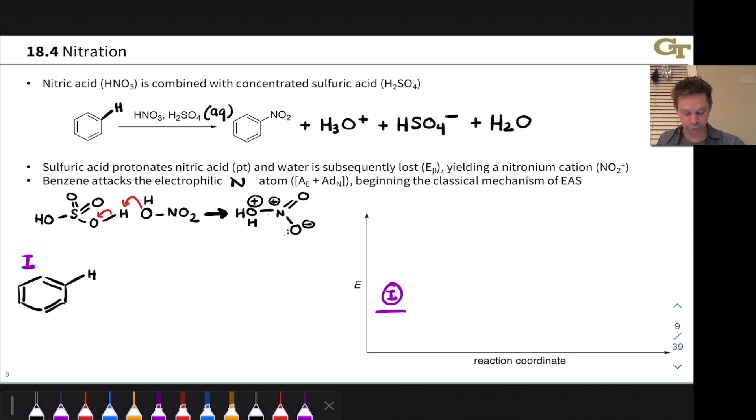That's a horribly unstable species, but it can immediately fall apart through a beta elimination step, through beta elimination type electron flow like this, to lose a molecule of water and produce a cation NO2+. And this NO2+ species is the active electrophile in nitration reactions of aromatics. It's called the nitronium cation.